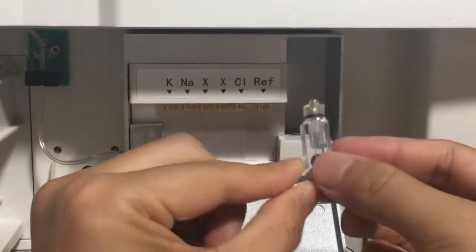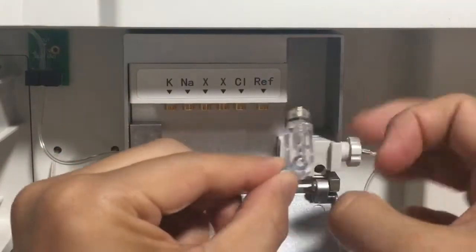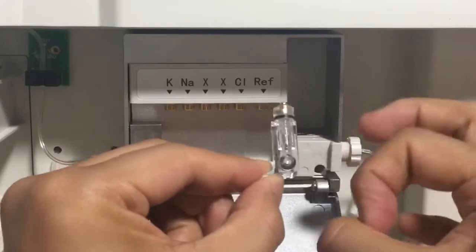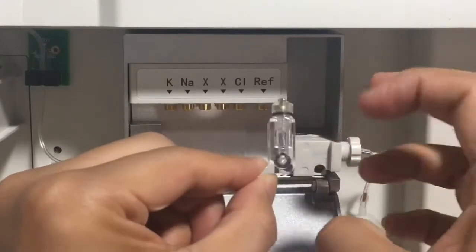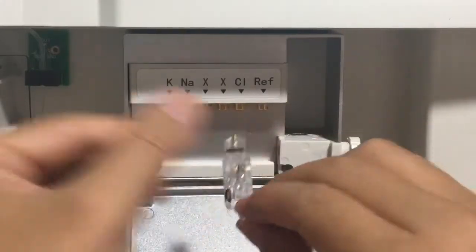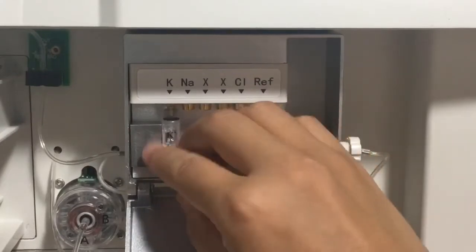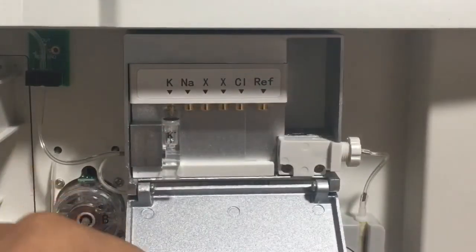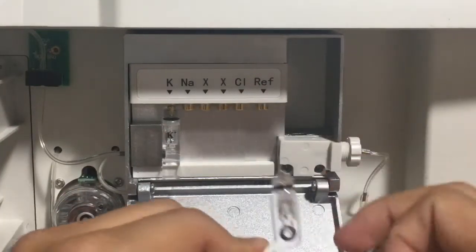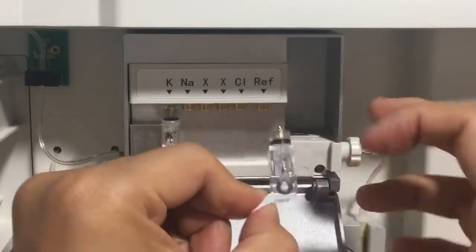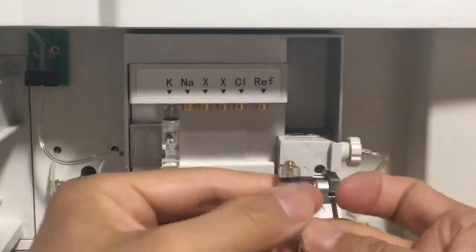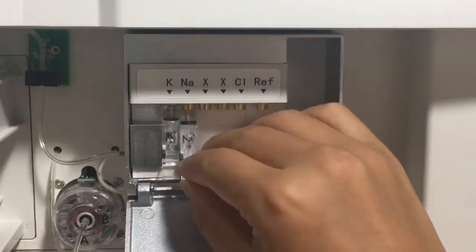We need to hold the electrode like this and use our finger to flap the bottom of the electrode. The bubble is too tiny to be seen, so every time you install the electrode you need to do this. We need to do this for each electrode.